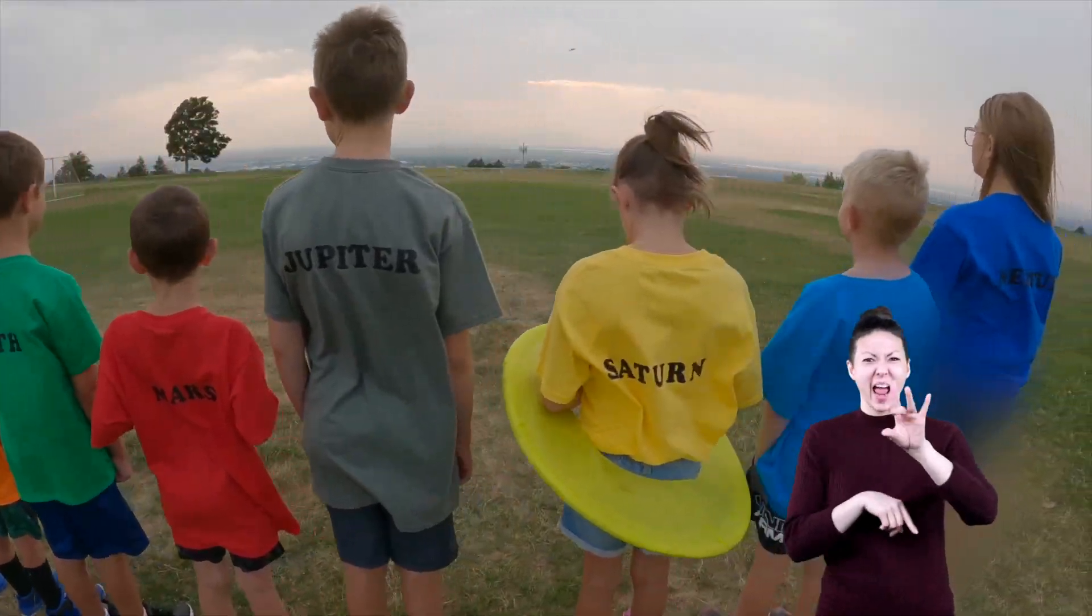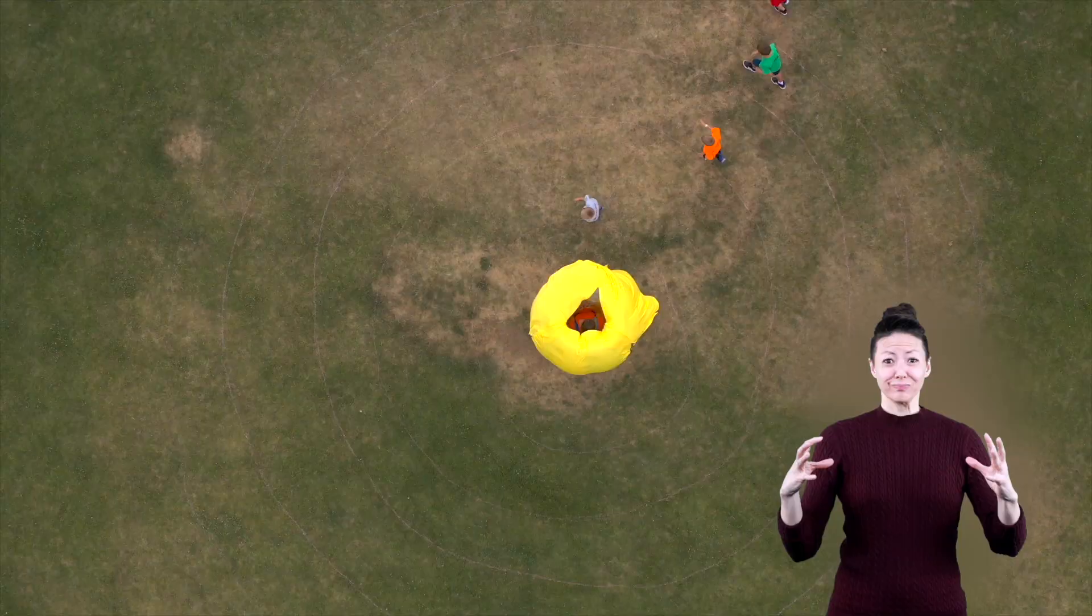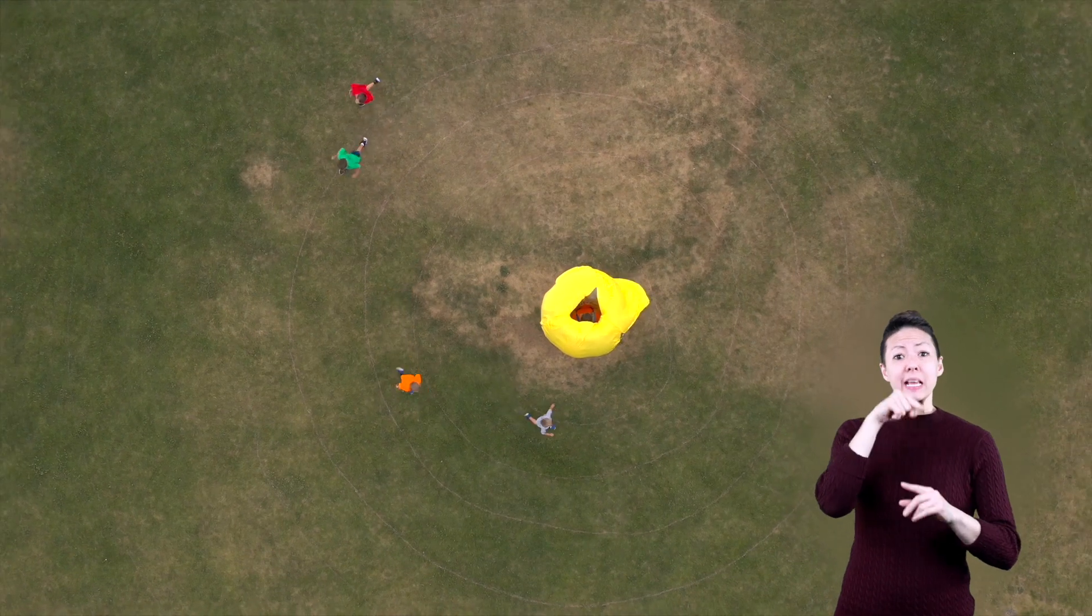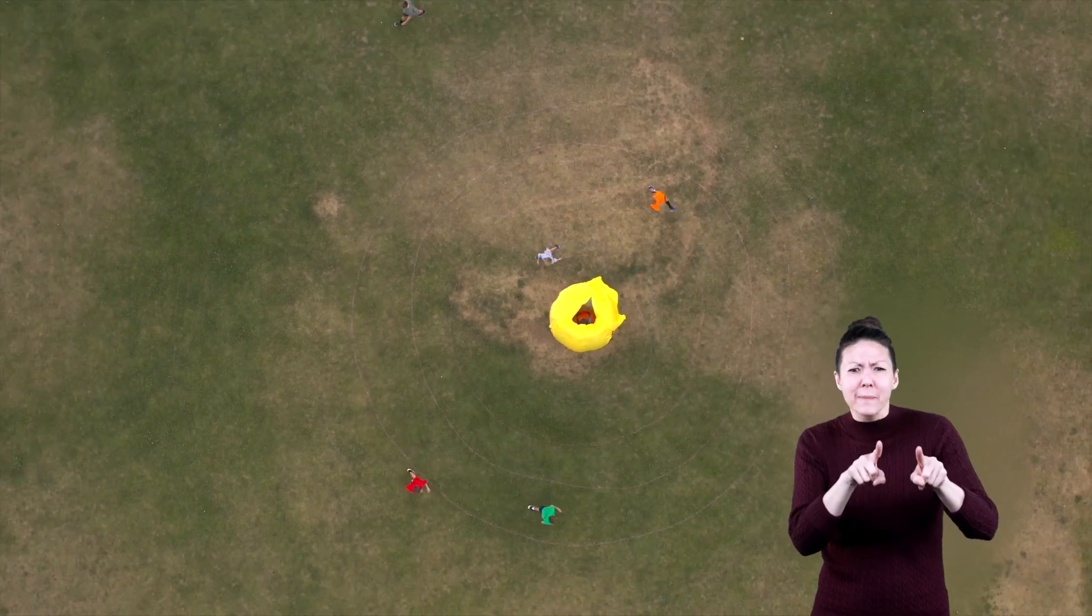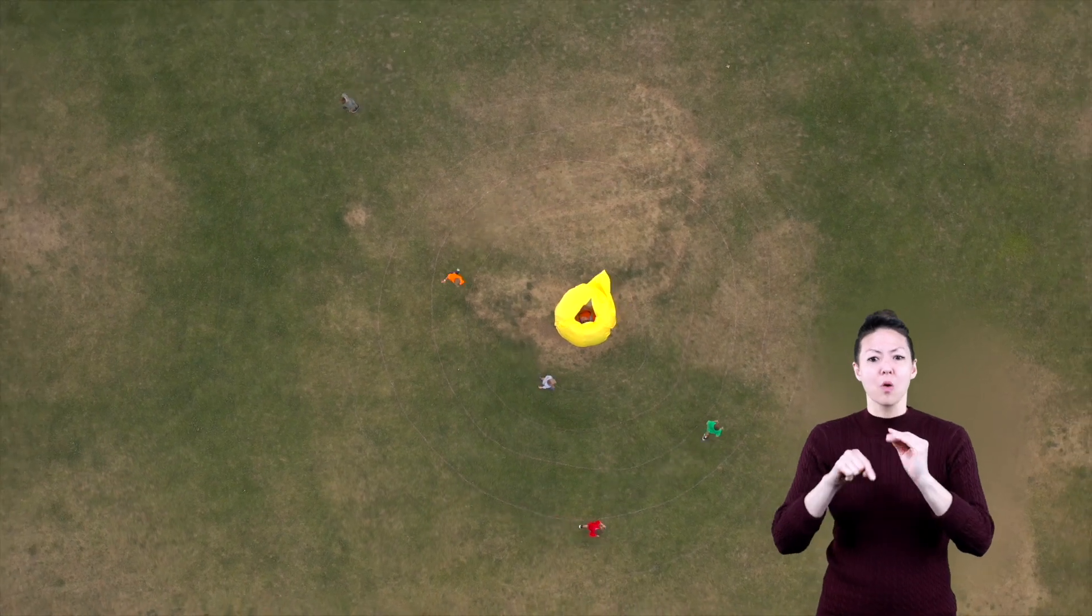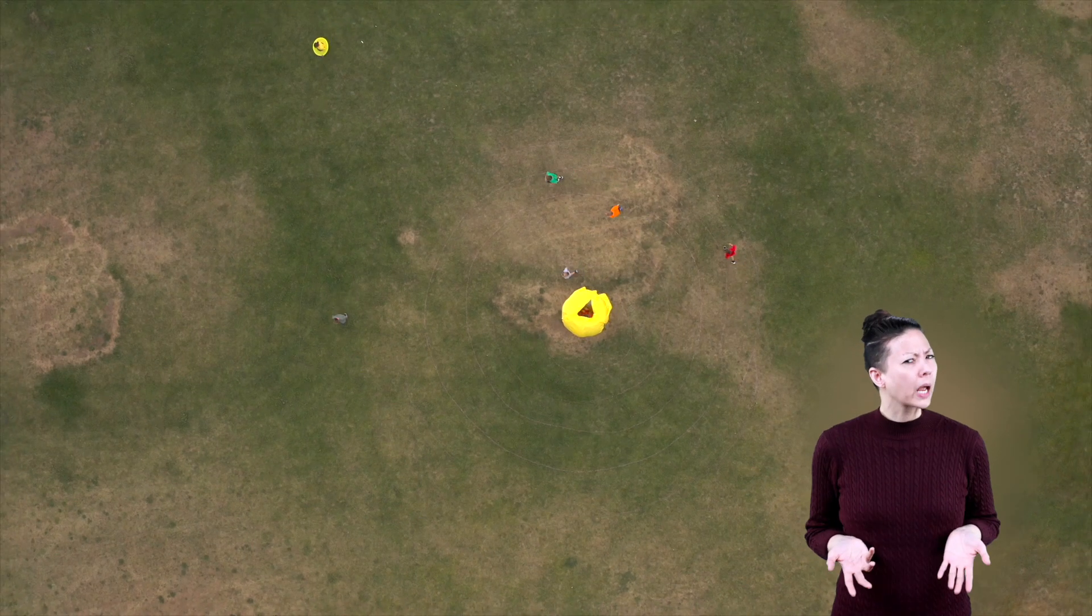Take a look at these eight kids standing around a big yellow ball. The ball represents the sun, and the kids represent each of the planets. Now watch what happens when they start to move or revolve around the sun.